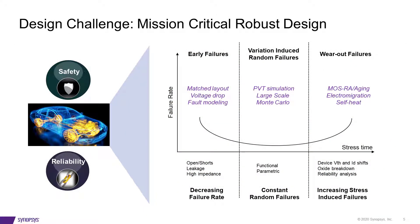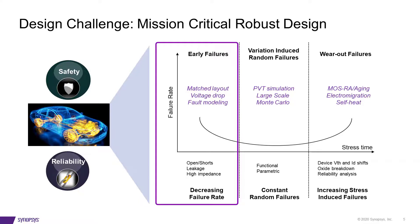The design challenge for mission-critical robust design is how to meet ever-increasing safety and reliability requirements. The failure rate of semiconductor chips at different life stages can be modeled by the bathtub curve. It describes a particular form of hazard function comprising three parts. The first part is a decreasing failure rate, known as early failures, where the failure rate is high but rapidly decreasing. Early sources of potential failures such as open shorts, leakage, and high impedance can be analyzed and eliminated by using static circuit check and fault simulation.